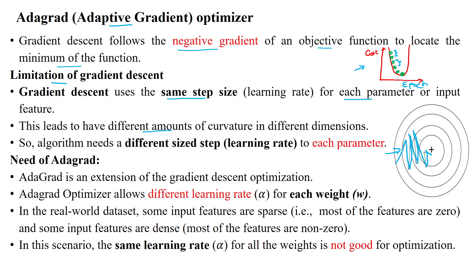We need a different learning rate for each and every parameter given with the input features to make the learning curve smoother and reach the converging point faster. This issue can be solved by using the Adaptive Gradient method, an extension of gradient descent optimization, which allows a different learning rate for each and every weight when applying the back-propagation method.